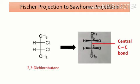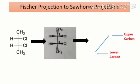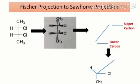Now, for converting the flying wedge to Sawhorse projection, look at the central carbon-carbon bond. We have to write the central carbon-carbon bond as a slanting line. Let's say carbon number 2 is the upper carbon and carbon number 3 is the lower carbon. To the lower carbon, the groups attached are H, Cl, and CH₃, out of which H and Cl are above the plane and CH₃ is below the plane. So we can show them as ticks as shown.